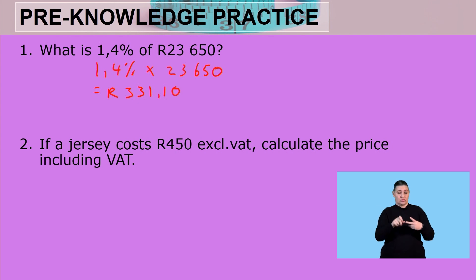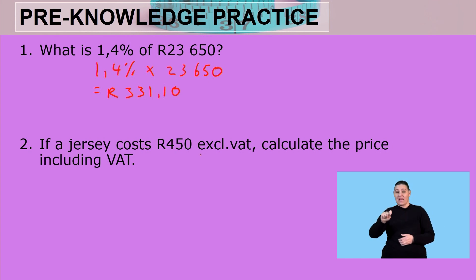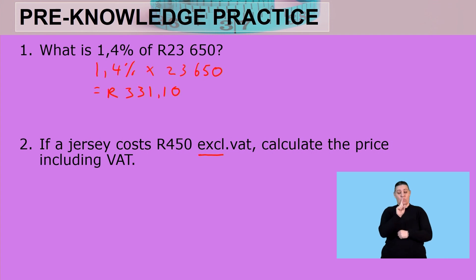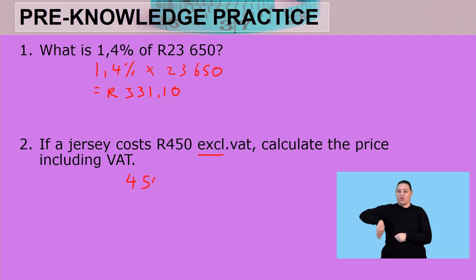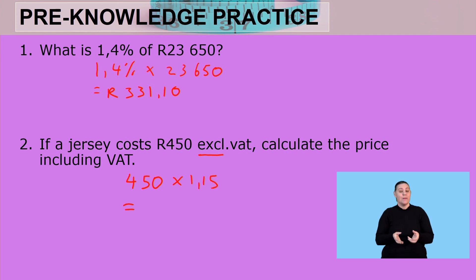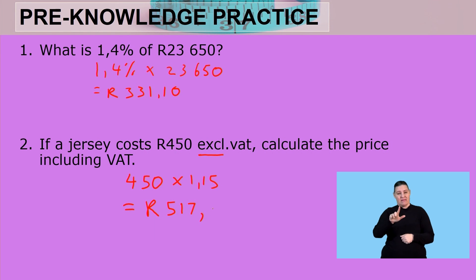Second question: If a jersey costs R450 excluding VAT, calculate the price including VAT. With VAT there are two calculations — either we times by 1.15 or we divide by 1.15. In this case, because we have the price excluding VAT, we times by 1.15, and that gives us R517.50.